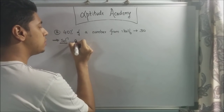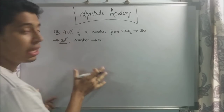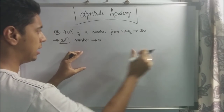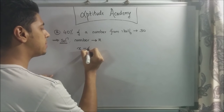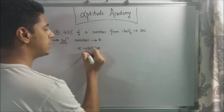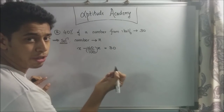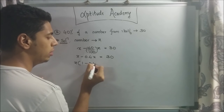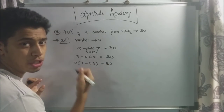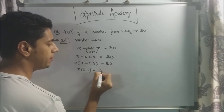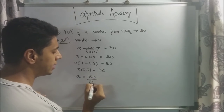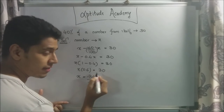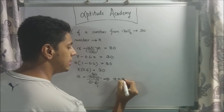For problem number 2, they've said that 40% of a number, when subtracted from itself, will give you 30. Assign the number as x. So x minus 40/100 of x equals 30. Since 40/100 is 0.4, we get x minus 0.4x equals 30. Factoring out x: 1 minus 0.4 equals 0.6, so 0.6x equals 30. Therefore x equals 30 over 0.6, which gives x equals 50.